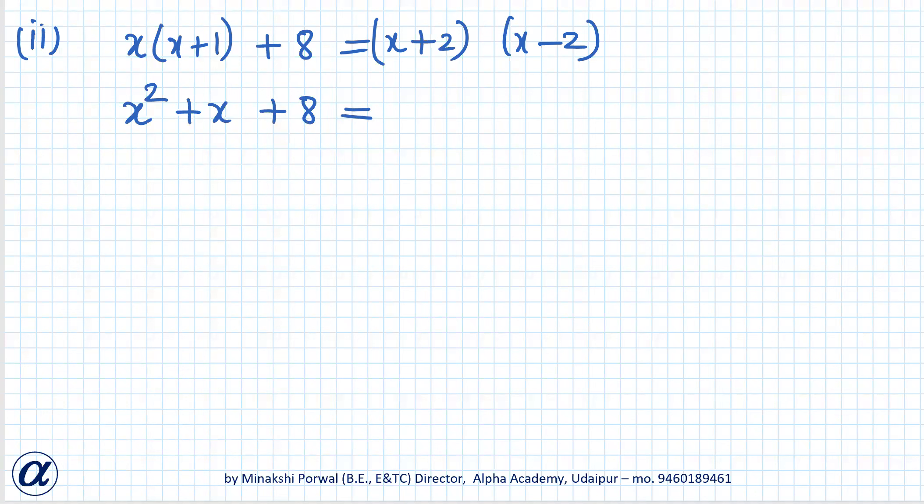For multiplying (x+2)(x-2), you can either do it by distributive property: x(x-2) + 2(x-2), or you can directly use the formula (a+b)(a-b) = a² - b². So x² - 4, since 2² is 4.